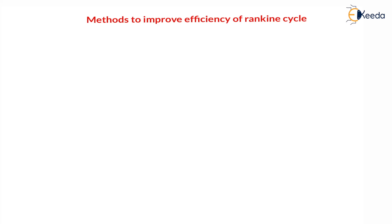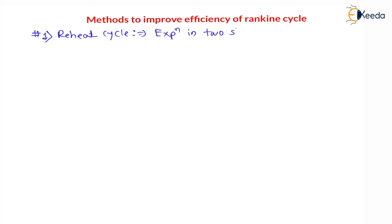The very first method to improve efficiency is the reheat cycle. In the reheat cycle, expansion is done in two stages with an intermediate reheater. So we can say: expansion in two stages, and there is an intermediate reheater used to heat the steam.